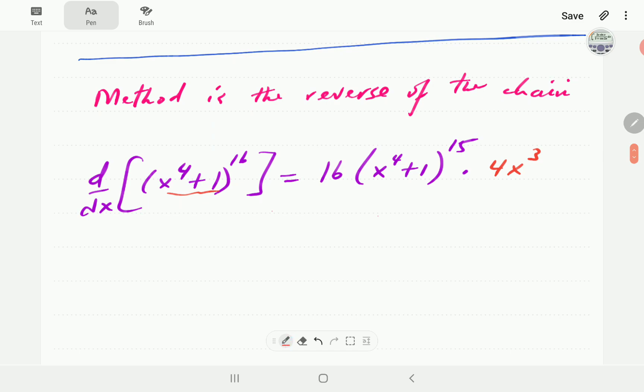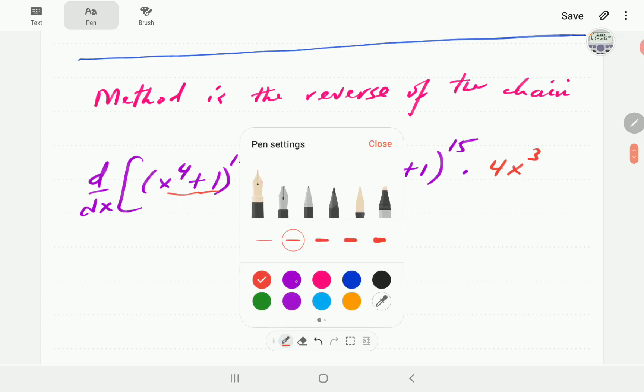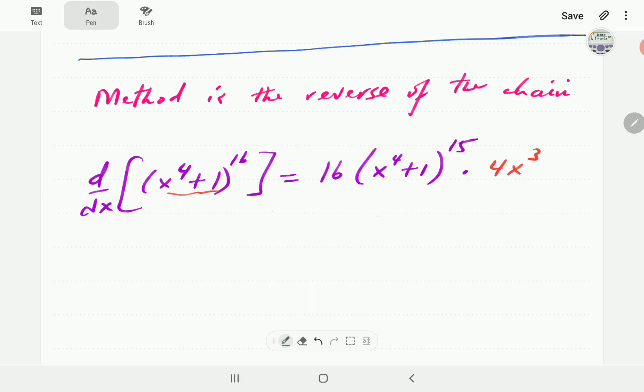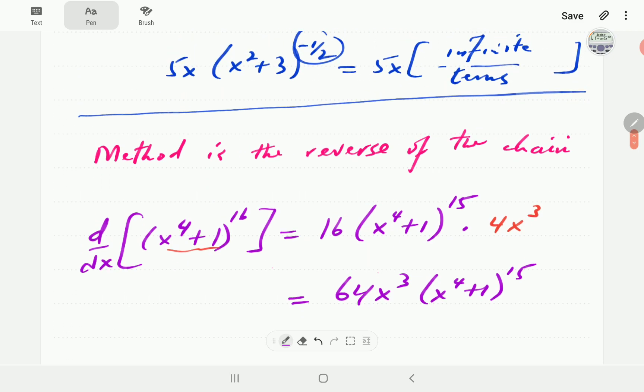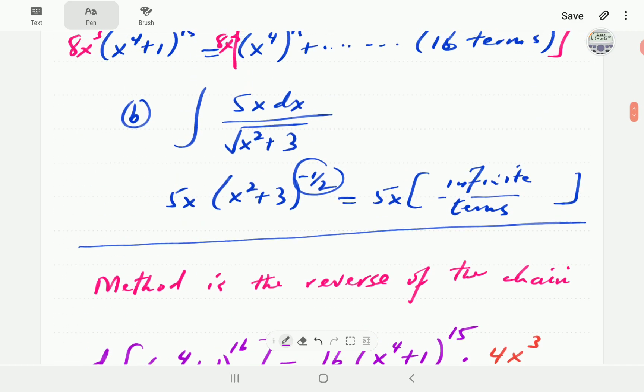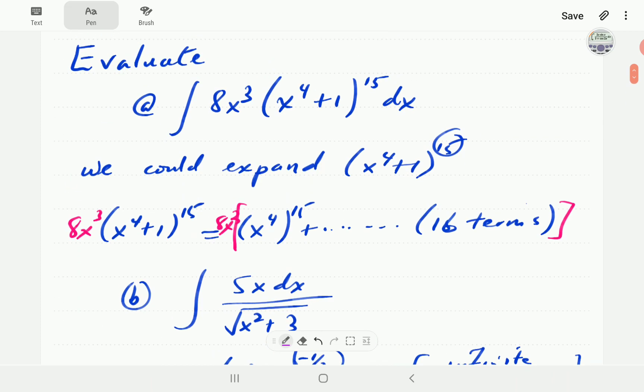And then, ultimately, this thing is going to simplify to, so 4 times 16, it's going to be 64x cubed, x to the power of 4 plus 1, all raised to the power of 15.